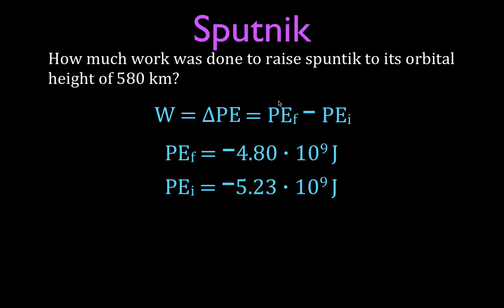Now we use the equation: work equals change in potential energy, which is always final minus initial. We have to be very careful with these negative signs. The minus sign on the potential energy means the object is still bound to Earth. Even though the number 4.80 is smaller than 5.23, with negative signs, negative 4.80 is actually bigger — closer to zero — than negative 5.23. So Sputnik in orbit has a higher potential energy than when sitting on Earth's surface.